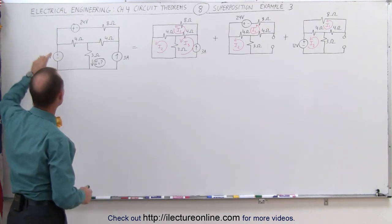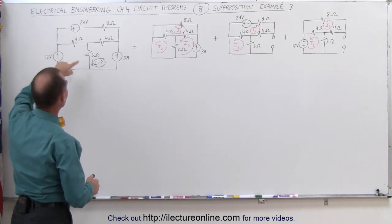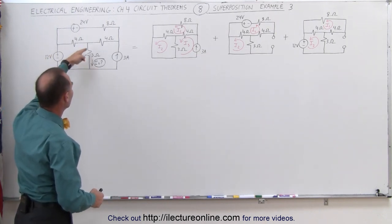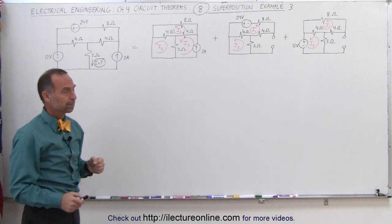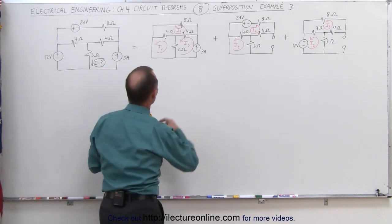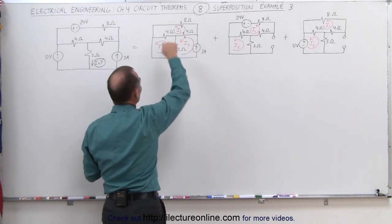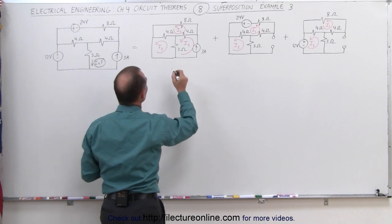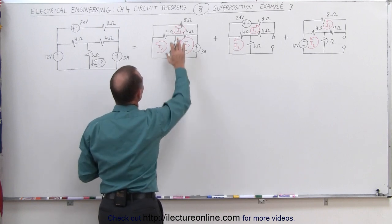Let's go ahead and solve the three different circuits separately. What we're trying to do here is find the current through the three-ohm resistor. Using mesh currents and going around each mesh, let's go ahead and see what we get.